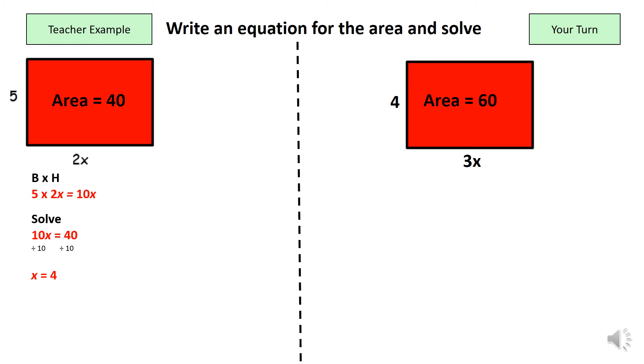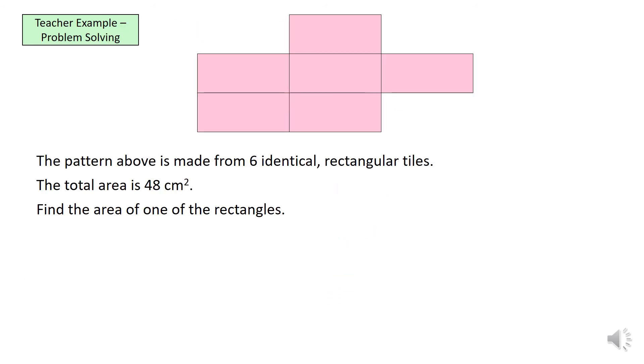Okay, we should have answered this question. And what we would have got is 12x equals 60 and divide both sides by 12 which would have given us x equals 5. Alright, now moving on, slightly trickier problem-solving questions.